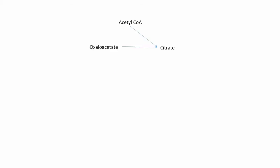So here is the first step within the cycle. Acetyl-CoA and oxaloacetate come together to form citrate. The enzymes for this and every other step will be covered in another video.